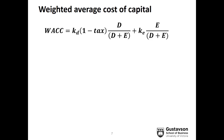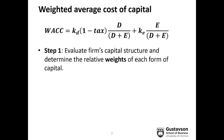There are four steps to calculating the weighted average cost of capital. Step one: evaluate the firm's capital structure and decide on what weights to use for the different sources of capital — debt, preferred, and equity. Given that many firms do not have preferred, the formula shows that preferred is zero and we're only focusing on debt and equity.